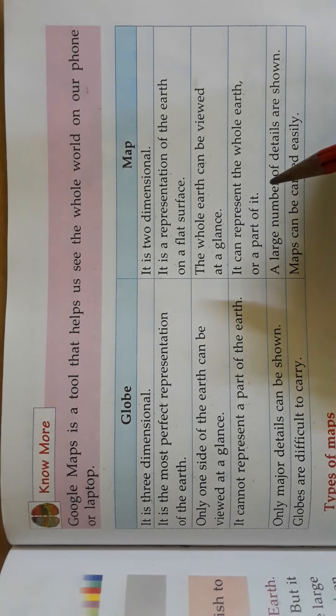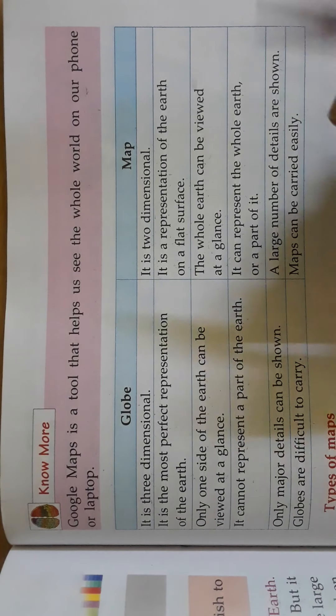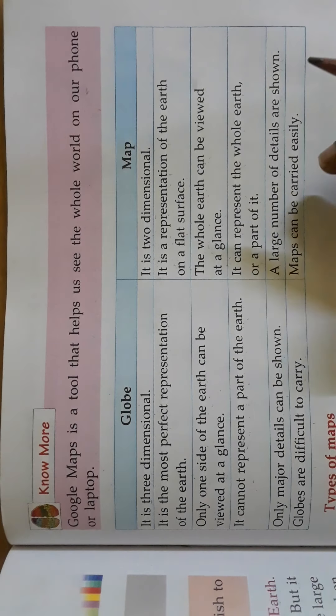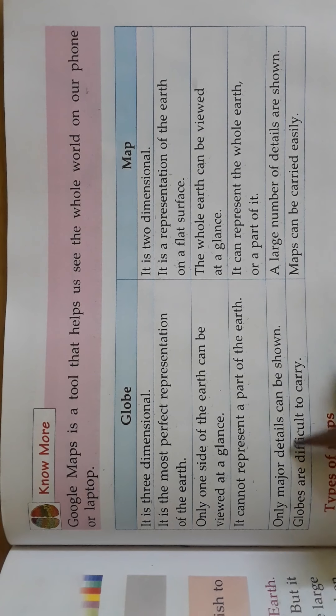The globe cannot represent a part of the earth — it shows only the whole earth. But a map can represent the whole earth or just a part of it.